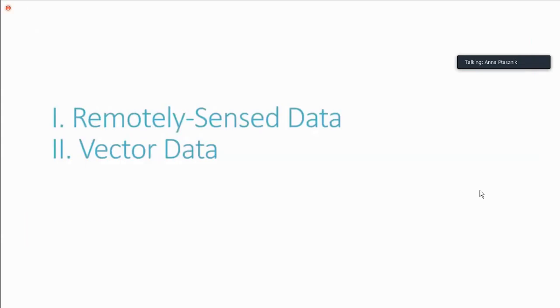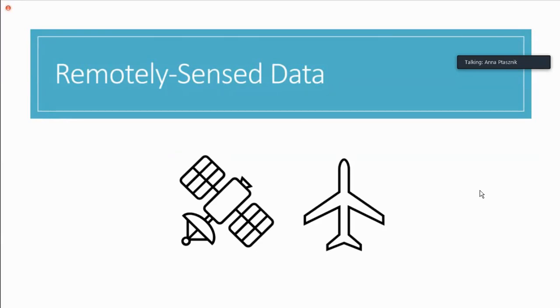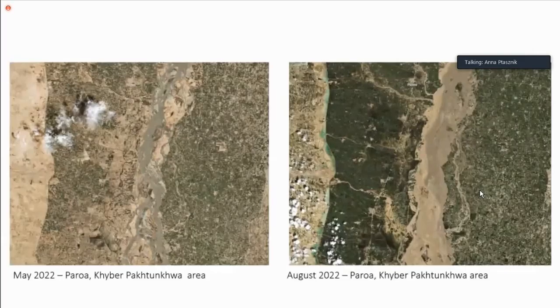We'll start with the data piece. I'm going to talk about two types of data: remotely sensed and vector data. When I talk about remotely sensed data today, I'm talking about satellite imagery and aerial imagery. This is satellite imagery taken before and after the flooding near the city of Perua. This is one of the most powerful tools we have because we can see what is actually happening at a given time.